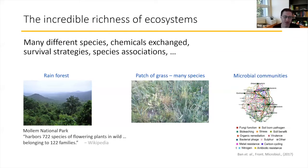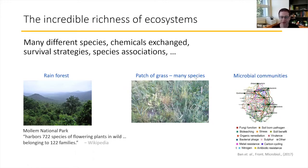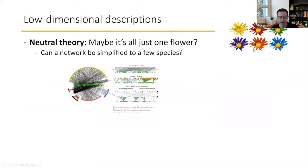One thing that is common to so much of what people in ecology are interested in is this incredible richness of ecosystems around us in nature. It's not just many different species — it's also the chemicals exchanged, survival strategies, species associating and interacting in many different ways. That is something that I find is also an important emotional point for ecologists: they tell you how they were seven years old, looked down into a pond, and knew they were going to be an ecologist.